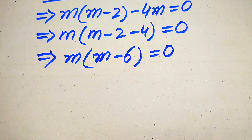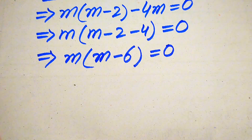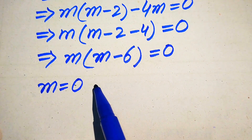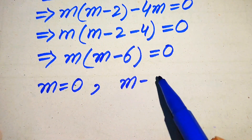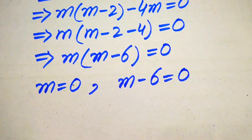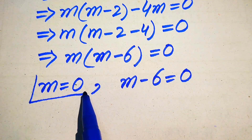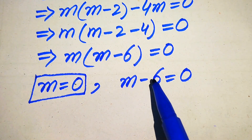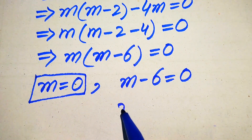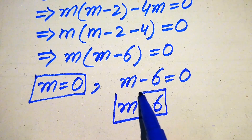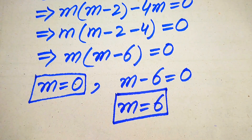In the next step we divide this equation into two cases. The first case gives m equals to 0, and the second case gives m minus 6 equals to 0. Moving minus 6 to the right hand side gives m equals to positive 6. So these are our two roots of the given equation.